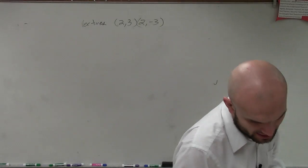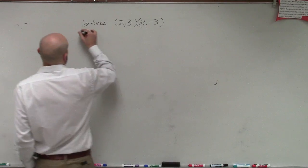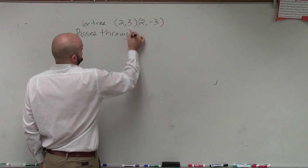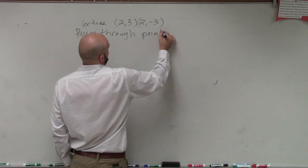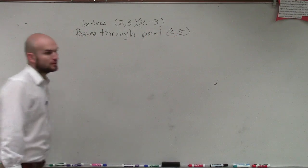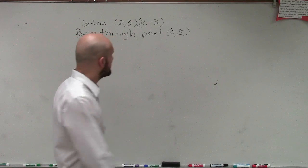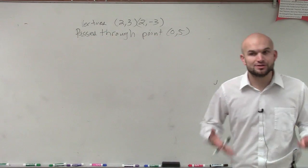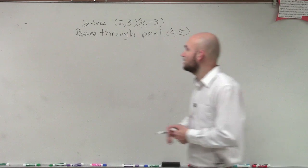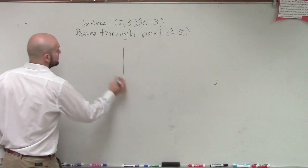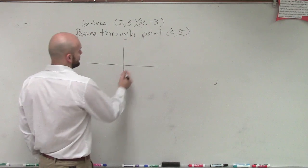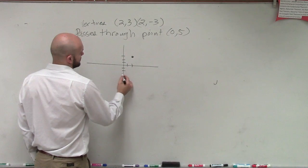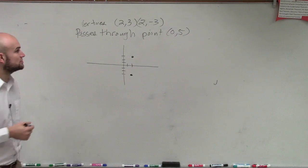Alright, so we have vertices, and then it says it passes through the point 0 comma 5. And what they ask us to do is find the standard form. Okay, so the main important thing is whenever you have a problem like this where we don't know which formula to use, you want to write out the information you're given. So the only thing we know right now is it crosses the point 2 comma 3 and 2 comma negative 3. Those are your two vertices.